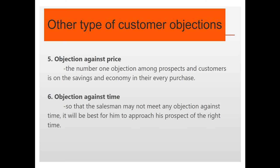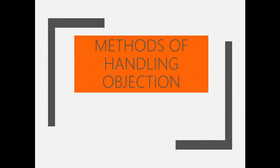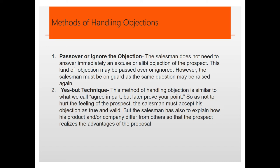Now let's look at the methods of handling objections. One method is to pass over or ignore the objection — the salesman does not need to immediately answer an excuse or alibi objection. He can just pass over or ignore it. However, the salesman must stay on guard as the same question may be raised again.